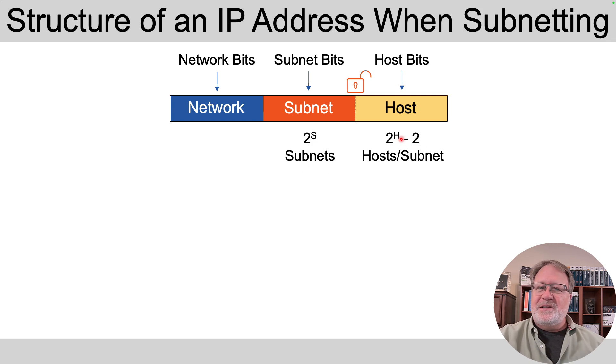And this minus 2 is because in any subnet, the subnet ID and the subnet broadcast address are reserved and cannot be assigned to a host to be used as an address. So you have to subtract those two out as reserved numbers.